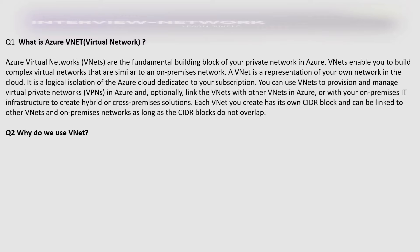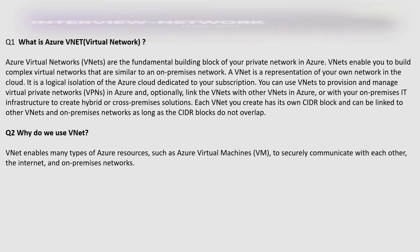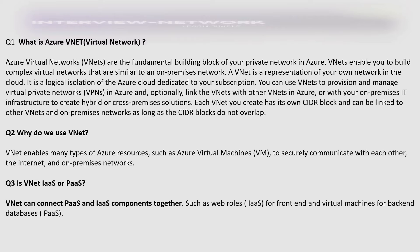Why do we use VNet? VNet enables many types of Azure resources, such as Azure Virtual Machines, to securely communicate with each other, the internet, and on-premises networks. Is VNet IaaS or PaaS? VNet can connect PaaS and IaaS components together, such as web roles in IaaS for front-end and virtual machines for back-end database, which is PaaS.